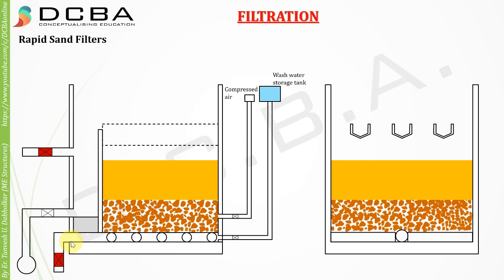Now comes the part of backwashing. Backwashing is done because the sand or filter media gets clogged very easily. To maintain the efficiency of the filter, the filtering media has to be washed. To do this, certain valves are closed and others opened, and there is a tank which stores the wash water — which is clean water. It can be some part of the filtered water that was previously collected.